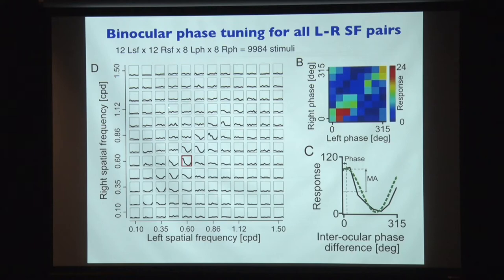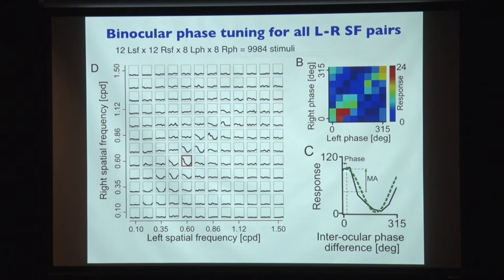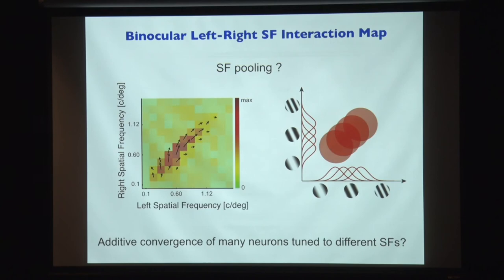What I show here is that each of these is a phase tuning curve. Phase means interocular phase going from 0 to 360 degrees, representing disparity tuning for different combinations of left and right spatial frequency. It's actually a four-dimensional experiment. To summarize, we extract the amplitude of disparity tuning and plot it as a heat map — it's very elongated, confirming the idea of spatial frequency pooling.